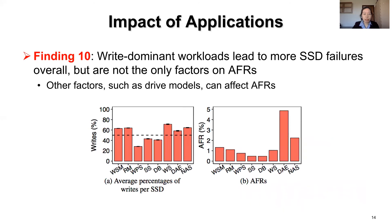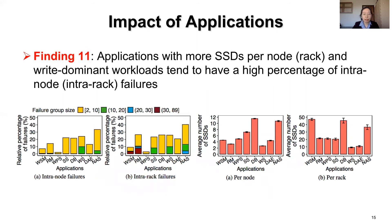We analyze the relationships between failure patterns and workload distributions of the eight most widely used applications. The figure shows that write-dominant workloads lead to more SSD failures overall, but are not the only factors on AFRs — other factors such as drive models can also affect AFRs. We find that applications with more SSDs per node or rack and write-dominant workloads tend to have a high percentage of intranode or intrarack failures.